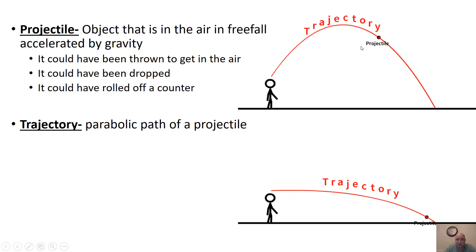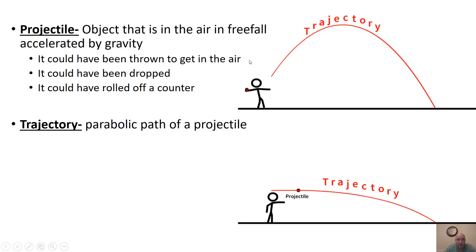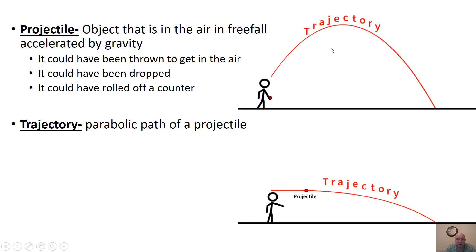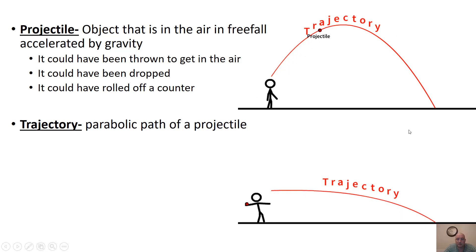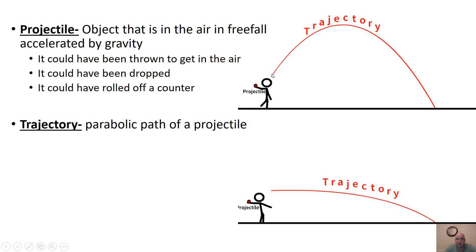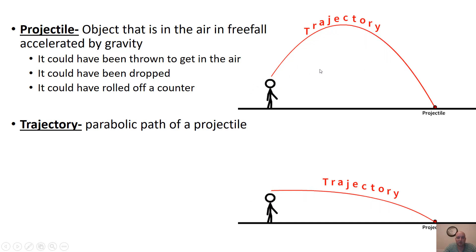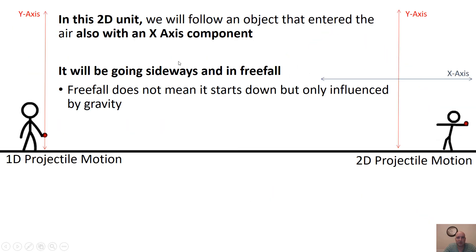The term projectile just means anything that's been thrown in the air. It could have gotten in the air any way — it could have been thrown up, dropped, or rolled off a counter. It doesn't even have to follow a curved path; unless it's 2D motion, the projectile itself can just be going up and down. But in this unit, we're going to have 2D motion.